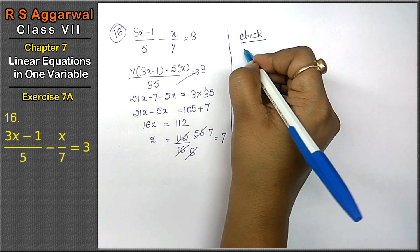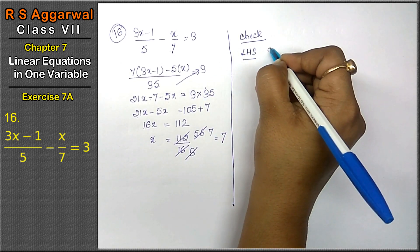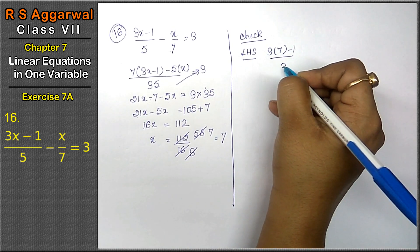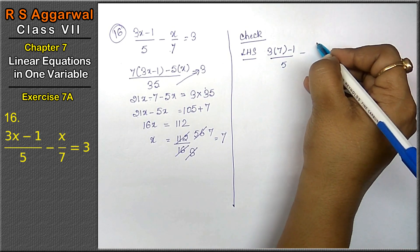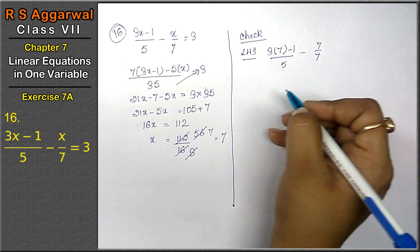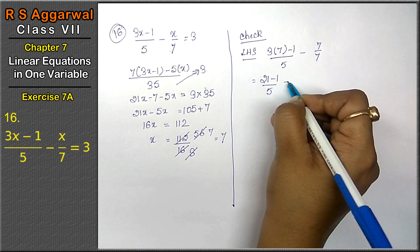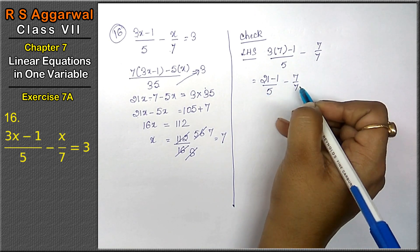Left-hand side. 3 into 7 minus 1 upon 5 minus 7 upon 7.